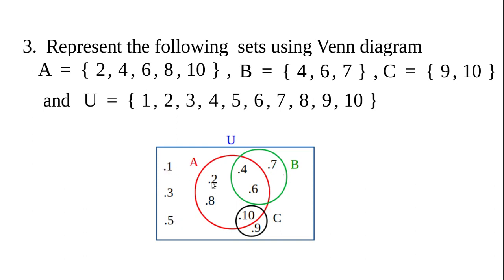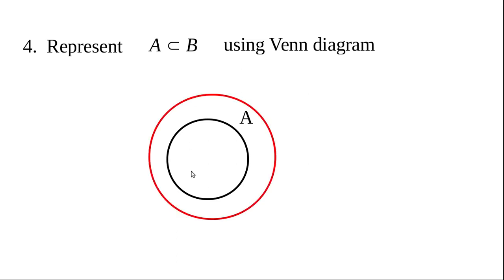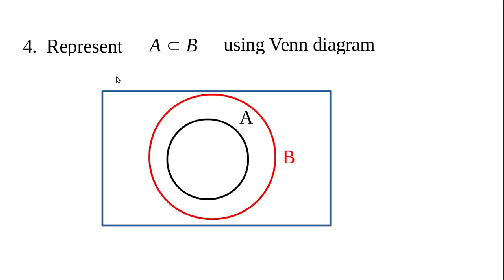Fourth example: represent A as a subset of B using a Venn diagram. Since A is a subset and B is the superset, draw A first, then draw B covering A completely. Finally, draw the universal set using a rectangle. This Venn diagram represents the relationship A ⊆ B.